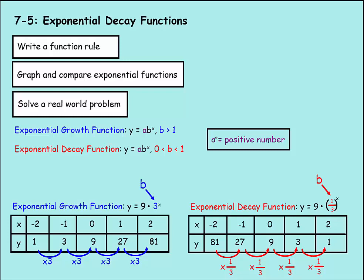Last lesson we learned about exponential growth functions, which are y equals a — a positive number — times b to the x power. All the b numbers we worked with last lesson were above 1, and that's what makes them growth functions. They're going to grow when b is above 1, when we keep raising numbers above 1 to more and more powers.